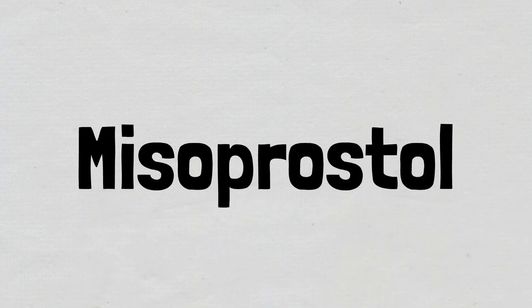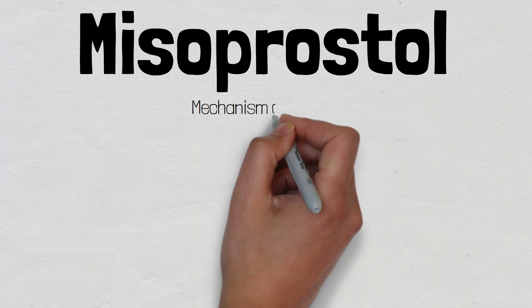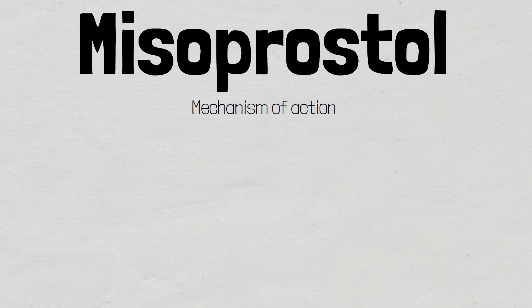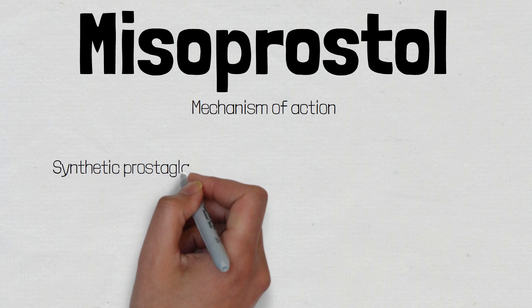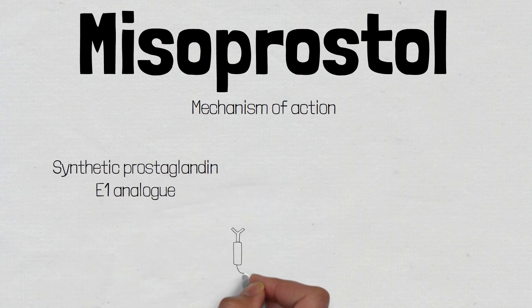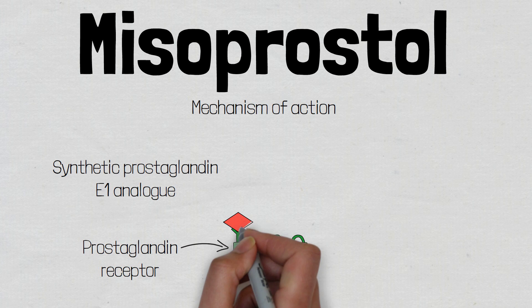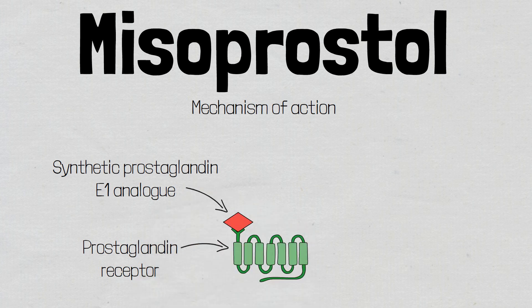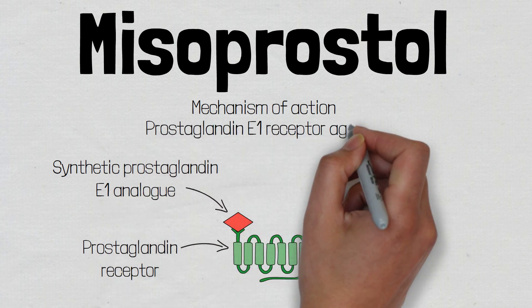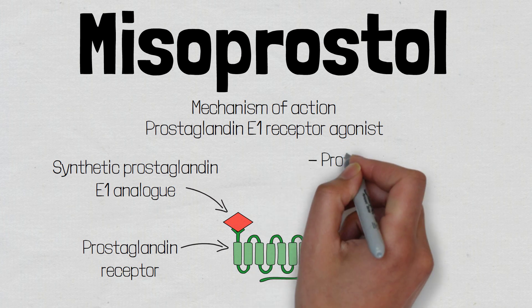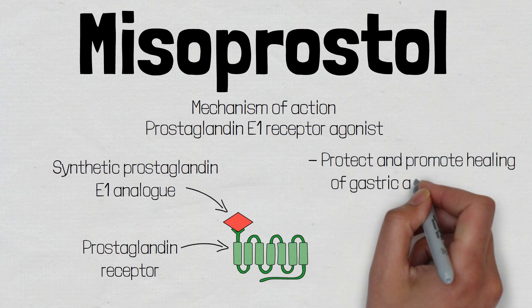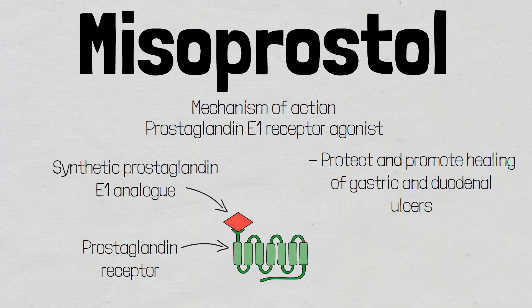Welcome to this video where we're going to be discussing the mechanism of action of misoprostol. Misoprostol belongs to a group of medications known as synthetic prostaglandin E1 analogues — a class of drug which binds to a prostaglandin receptor and mimics the effect that a natural prostaglandin would have. Because misoprostol activates its target receptor, it is a prostaglandin E1 receptor agonist. Misoprostol is used to protect and promote healing of gastric and duodenal ulcers, as well as a potent uterine stimulant.